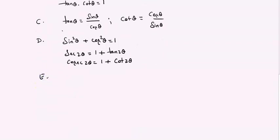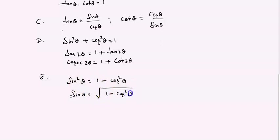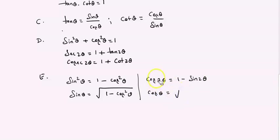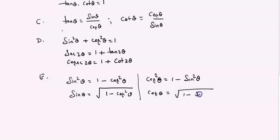The corollary relations: sin squared theta equals 1 minus cos squared theta, so sin theta equals root of (1 minus cos squared theta). Cos squared theta equals 1 minus sin squared theta, so cos theta equals root of (1 minus sin squared theta). Remember: sin squared theta is 1 minus cos squared theta, and cos squared theta is 1 minus sin squared theta.